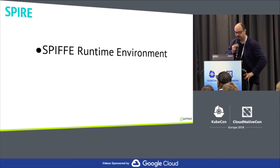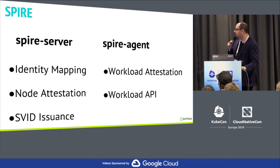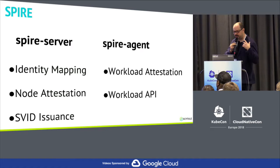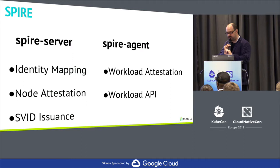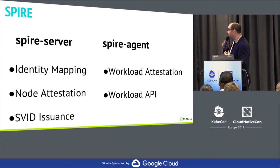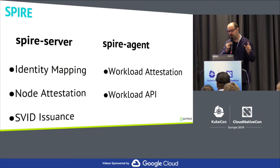SPIRE is made up of two parts: SPIRE server and SPIRE agent. The SPIRE server does identity mapping, node attestation, and SVID issuance. The SPIRE agent does workload attestation and the workload API. We have APIs and plugins — the APIs call on the plugins, and each plugin has a protobuf definition in the GitHub repo. When we first put out SPIRE, plugins were external processes. Recently we changed that — you can have an external process called via gRPC, or compile the plugin into either the SPIRE server or agent.